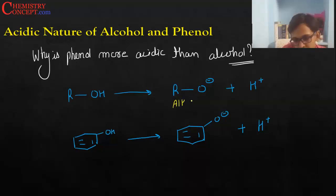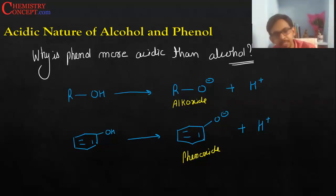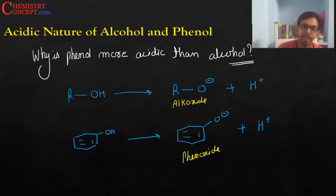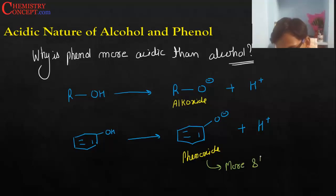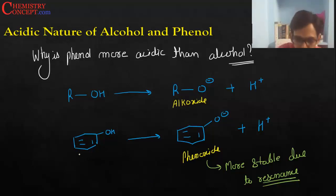The first product is alkoxide ion and the second is phenoxide ion. Now the question comes: which of the two is more stable? Alcohol will release a proton only when its product is more stable, and phenol will release a proton only when its product is more stable — any reaction happens only when the product is stable. Phenoxide ion is more stable due to resonance, and because phenoxide ion is more stable, phenol has a greater tendency to release a proton — so it is more acidic.